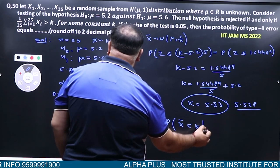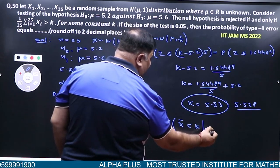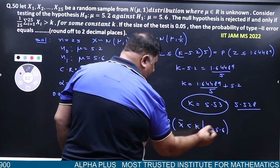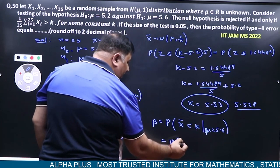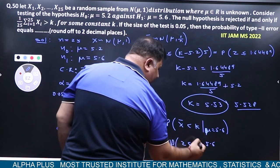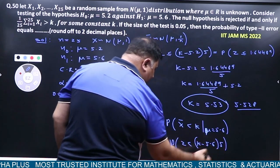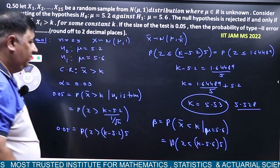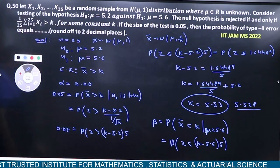When H₁ is true, μ ki value 5.6 kar lo. Then K minus 5.6 times 5. K ki value to pass hai na, 5.528.